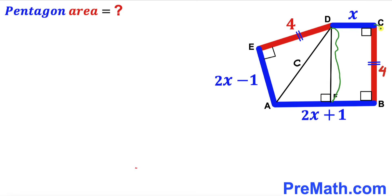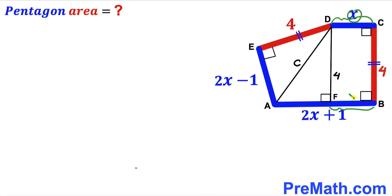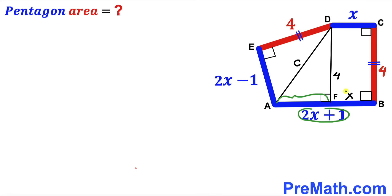We observe that DF equals BC, so DF is 4 units. We also see that segment BF equals segment CD, which is x. Since the whole AB segment is 2x plus 1, the remaining segment AF is (2x + 1) minus x, which gives us x plus 1.